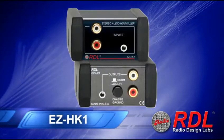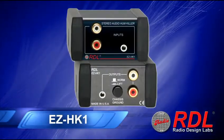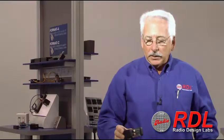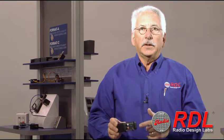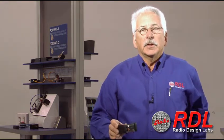The EZ-HK1 is an audio hum killer that eliminates the ground loop. Like all of the HK series products, it has gold-plated RCA jacks. This unit is designed to be connected to unbalanced stereo audio equipment and sound systems or audio video systems.